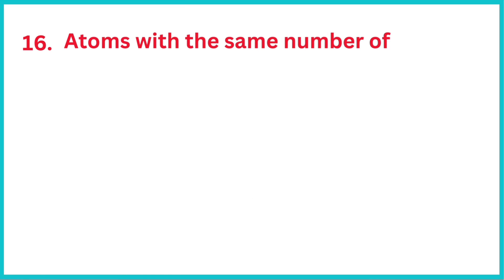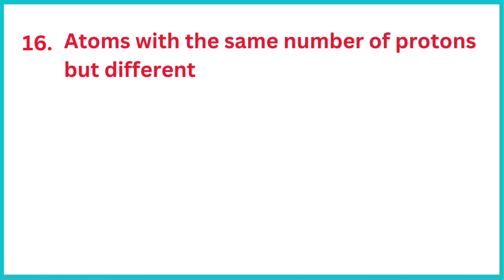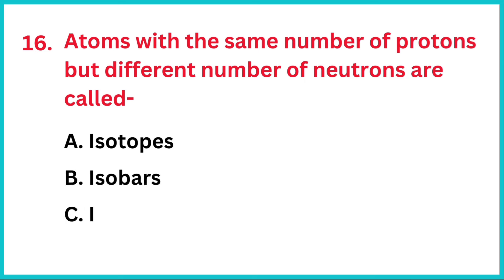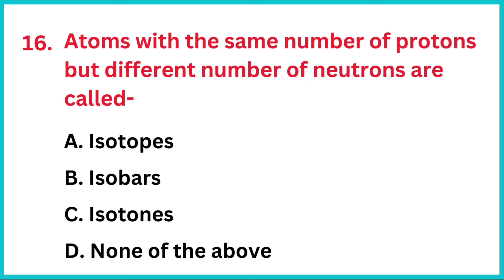Atoms with the same number of protons but different number of neutrons are called? Right answer is option A, Isotopes.